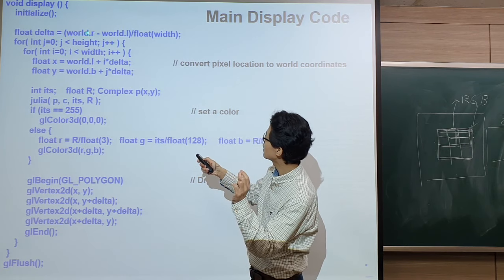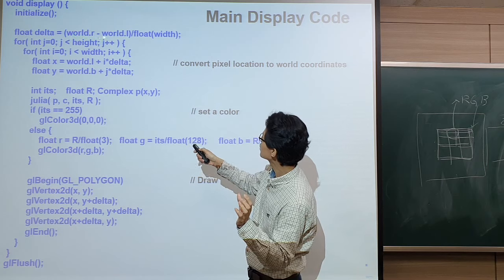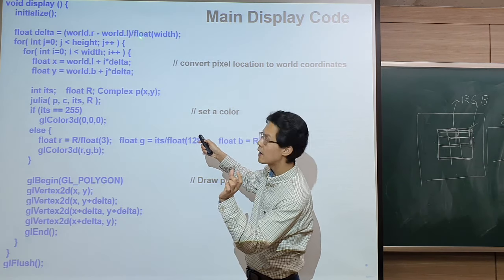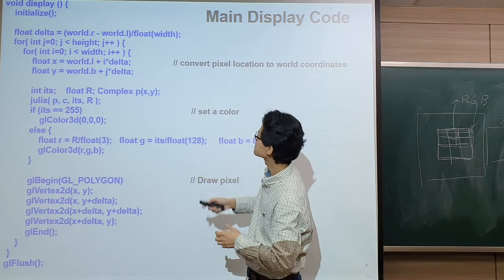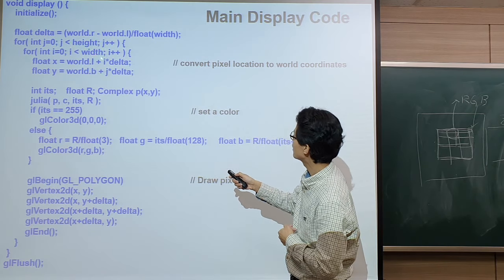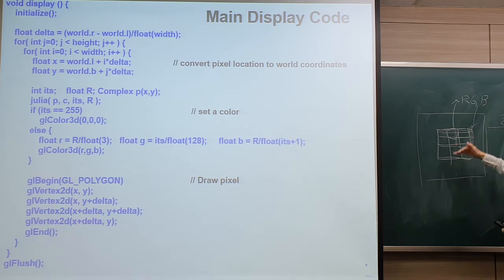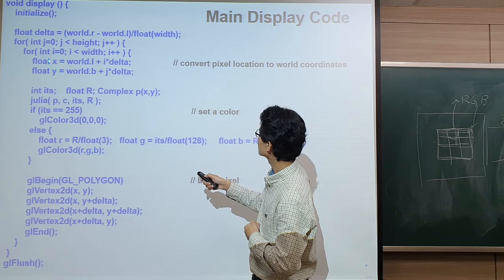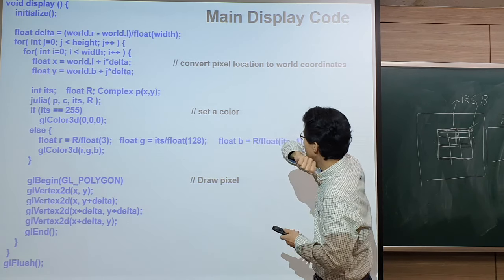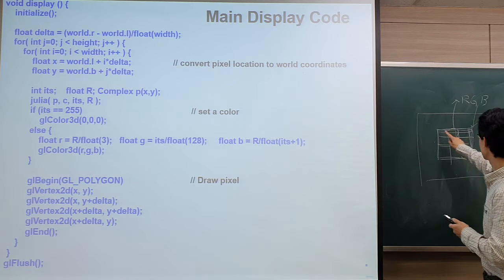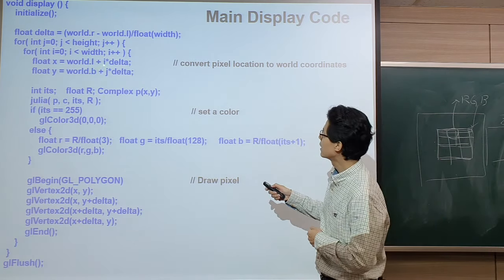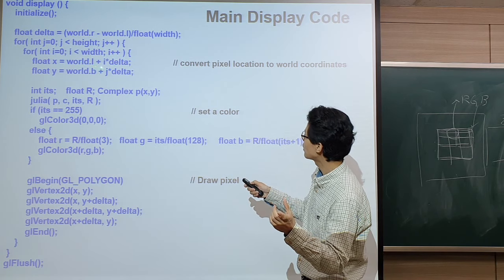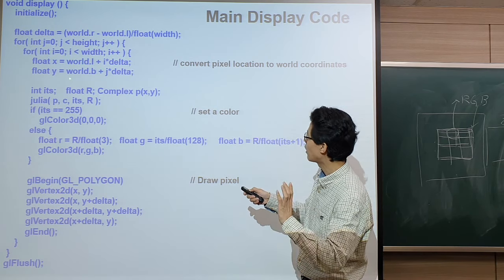We need to go through all the pixels from left to right and top to bottom. We go through every pixel and compute the actual world coordinate for each pixel. We start from world left and bottom, and when we increase pixel by pixel, we increase the world x and y coordinate accordingly. We compute the x and y coordinate in the world for each pixel.